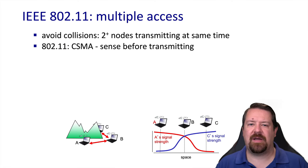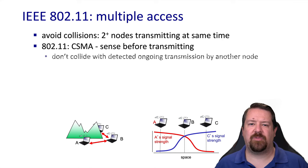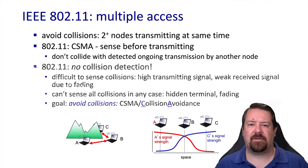802.11 uses the CSMA-CA algorithm — carrier sense multiple access — which means that if one node is transmitting, all other nodes should listen and not start transmitting at the same time. This mechanism is susceptible to the hidden terminal problem, where not all nodes can hear the transmissions of every other node. Also, this is CSMA-CA, not CD. In wired Ethernet we had CSMA-CD, carrier sense multiple access with collision detection. However, in the wireless environment it's technically very challenging to sense collisions as they happen, so there's no collision detection in wireless — instead we have collision avoidance, CSMA/CA.